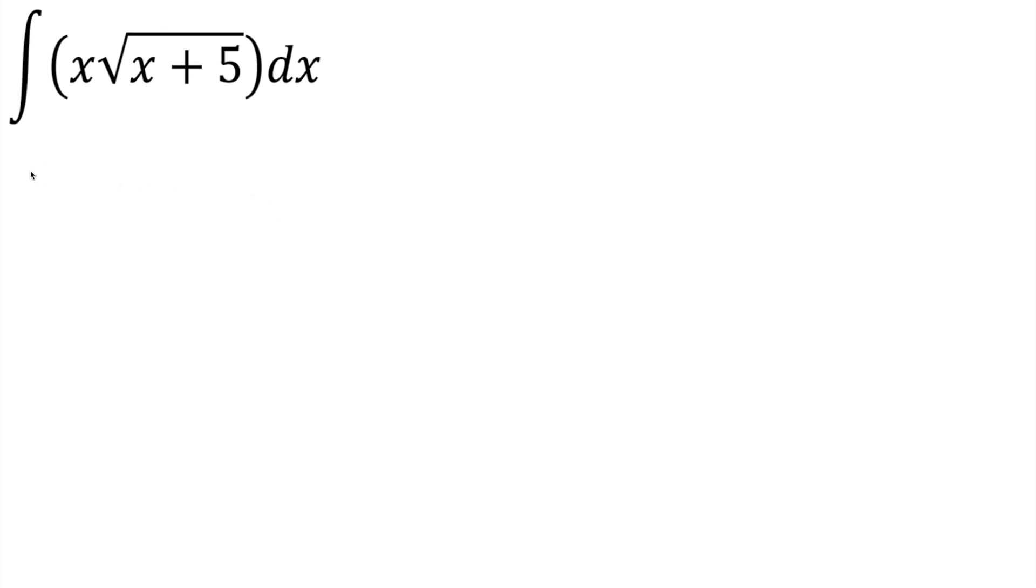So what we're going to say for this problem is that u is equal to the inside piece x plus 5, then our du would be 1 or dx because the derivative of x is just 1, so just dx.